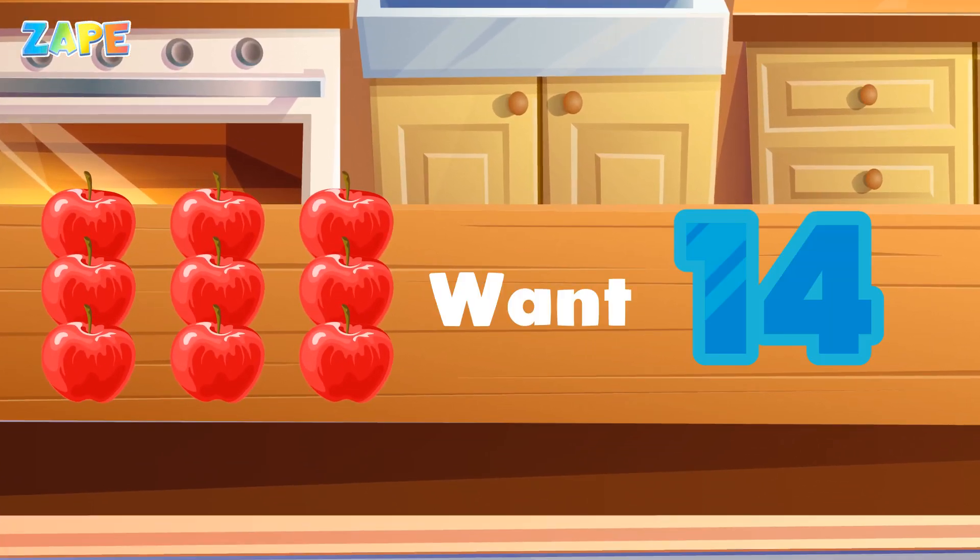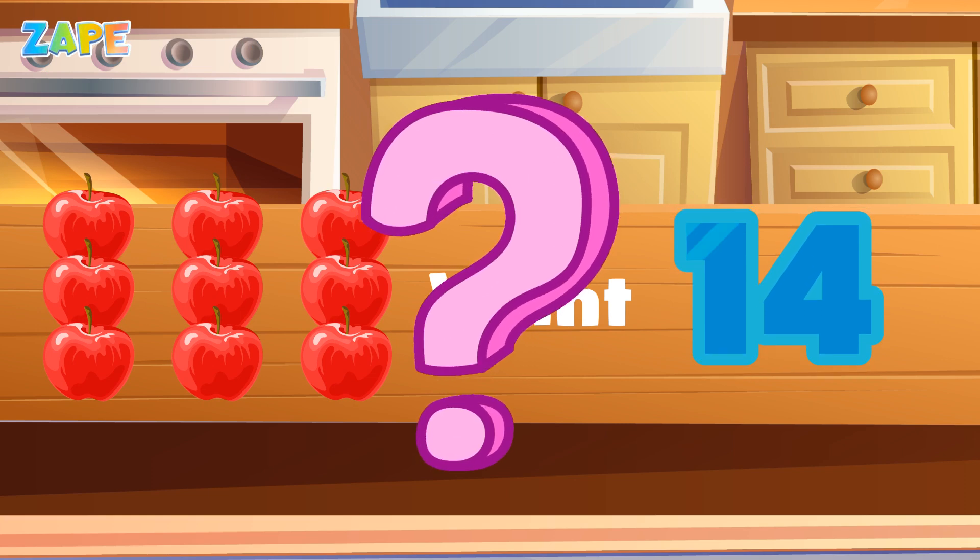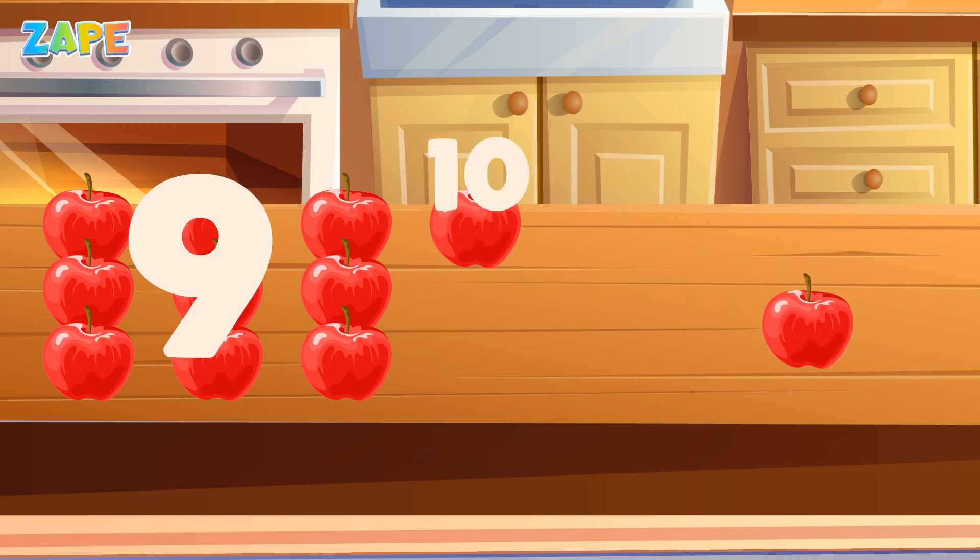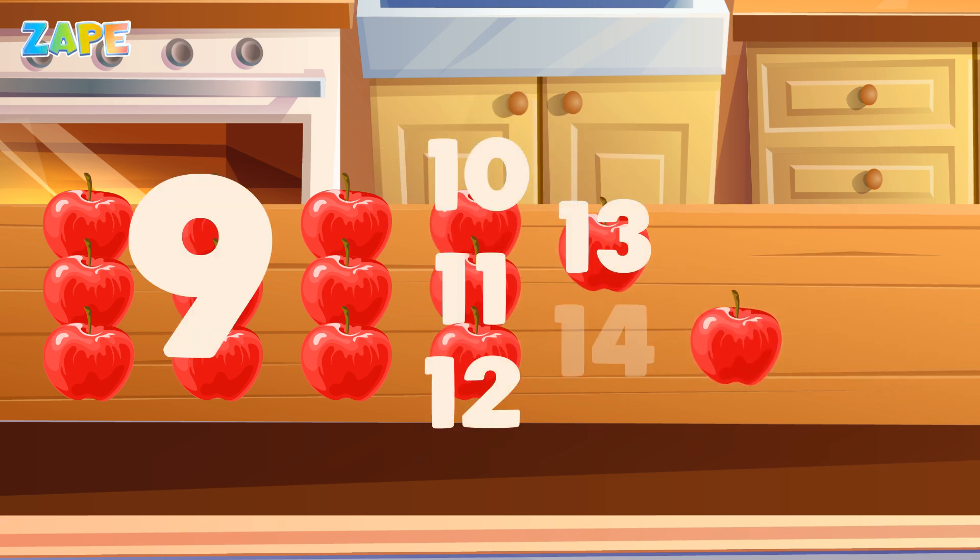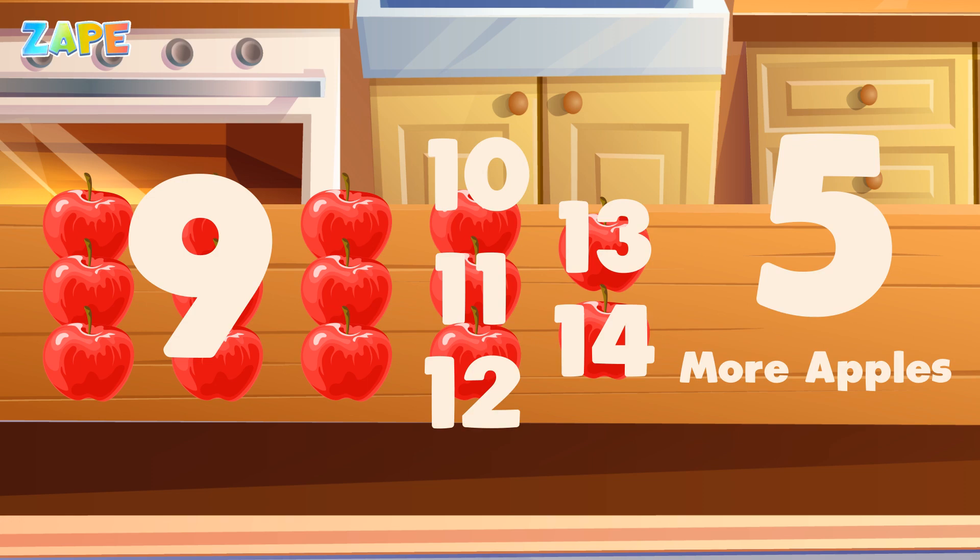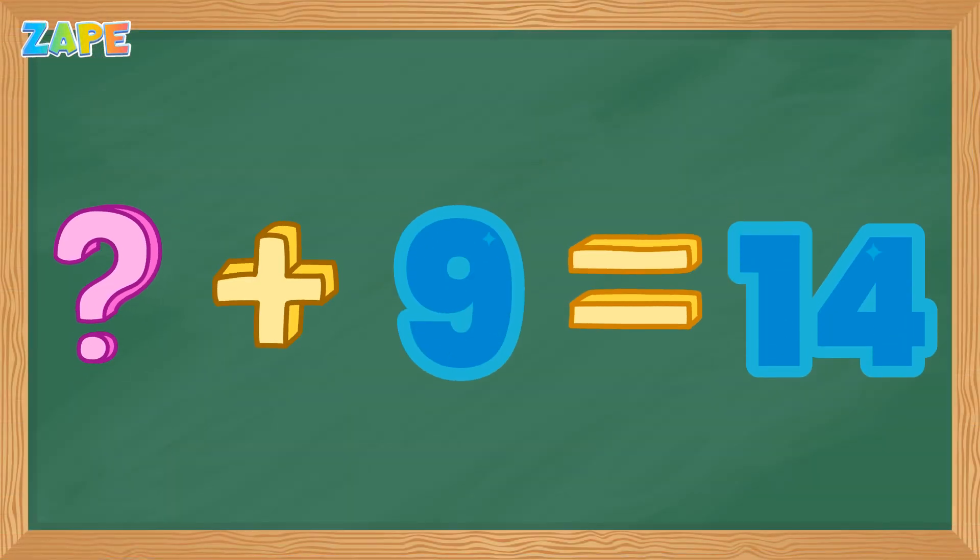Imagine you already have 9 apples, and you want 14 apples in total. How many more apples do you need to reach 14? Let's count together. 9, 10, 11, 12, 13, 14. We added 5 more apples. So, the missing number is 5.